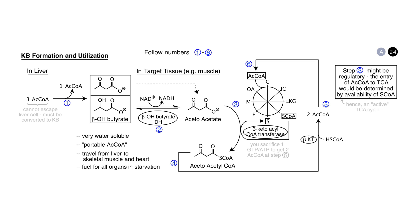To review: the liver packages acetyl-CoA into the ketone bodies acetoacetate and beta-hydroxybutyrate, which travel in the blood to target tissues such as muscle, heart, or brain. In these target tissues, the ketone bodies are converted to acetoacetate, then to acetoacetyl-CoA, and ultimately to acetyl-CoA, which is used to generate energy via the TCA cycle. This is particularly important under conditions of starvation and diabetes.